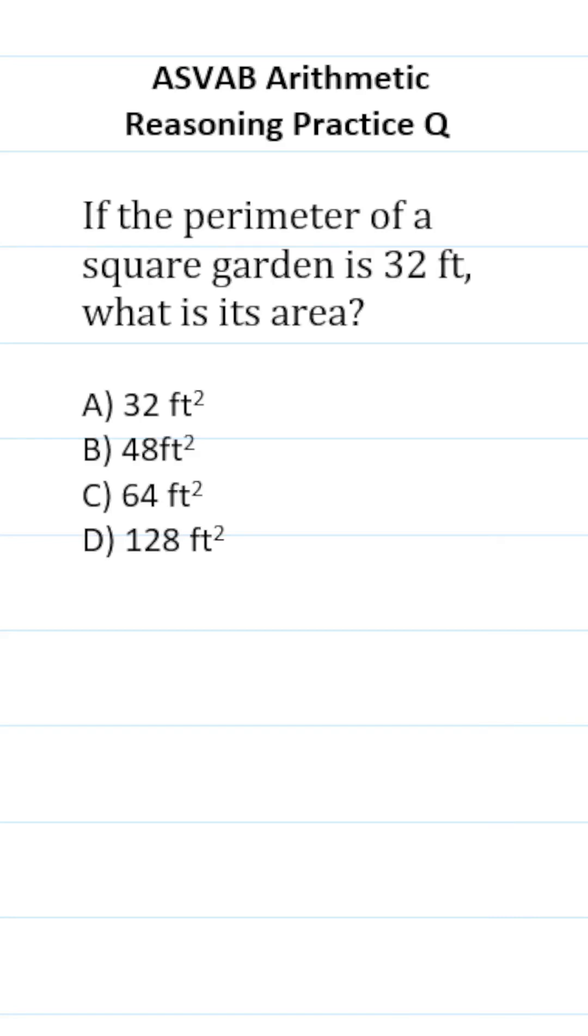Solve this ASVAB arithmetic reasoning practice test question in 60 seconds. It says if the perimeter of a square garden is 32 feet, what is its area?